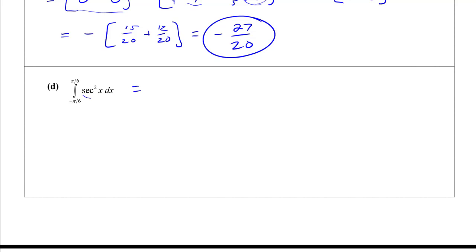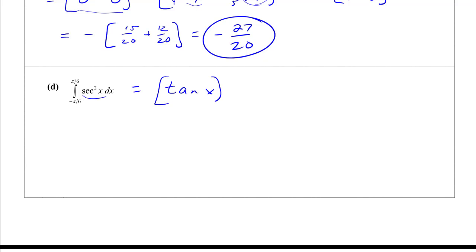For the next integral: can I integrate secant squared? Yes — secant squared integrates to tangent. So it's tan x from -π/6 to π/6, which is tan(π/6) minus tan(-π/6). tan(π/6) is sine(π/6) over cosine(π/6), which gives 1 over radical 3.